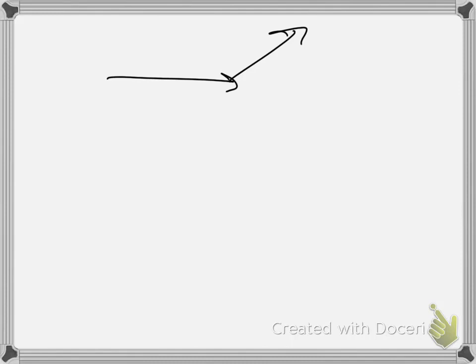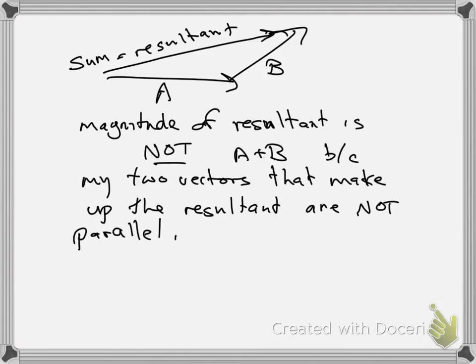So if the first vector, now again, I'm just going to draw the magnitudes A and B. I won't bother writing out the whole notation and say what's the magnitude of the resultant vector? When we talk about a resultant vector, it means the sum. So the magnitude of the resultant vector is not A plus B because my two vectors that make up the resultant are not parallel.